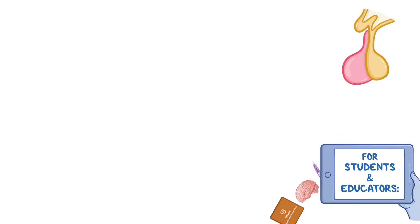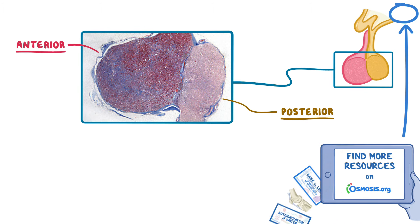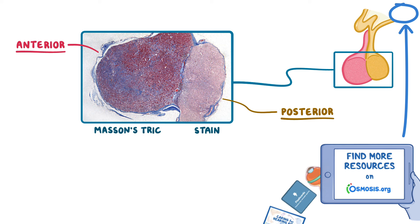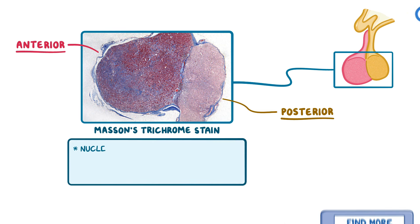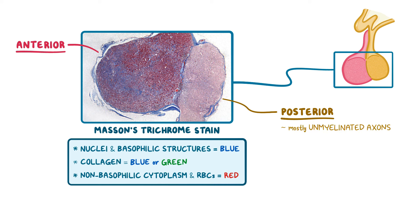In this low-power parasagittal section of the pituitary gland, the anterior and posterior parts of the pituitary can be identified pretty easily when stained with Masson's trichrome. Generally, this stain will stain nuclei and basophilic structures blue, collagen will be blue or green, and non-basophilic cytoplasm and red blood cells will be red. The posterior pituitary is composed of mostly unmyelinated axons, which do not have nuclei or a large amount of collagen. As a result, the posterior pituitary doesn't stain well and will look significantly lighter compared to the anterior pituitary, whether stained with Masson's trichrome or hematoxylin and eosin.